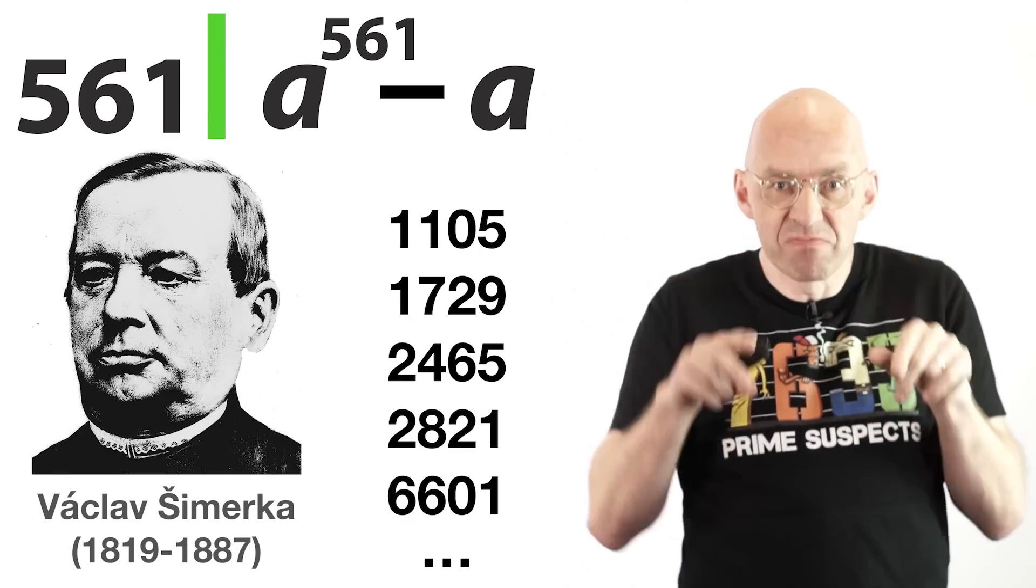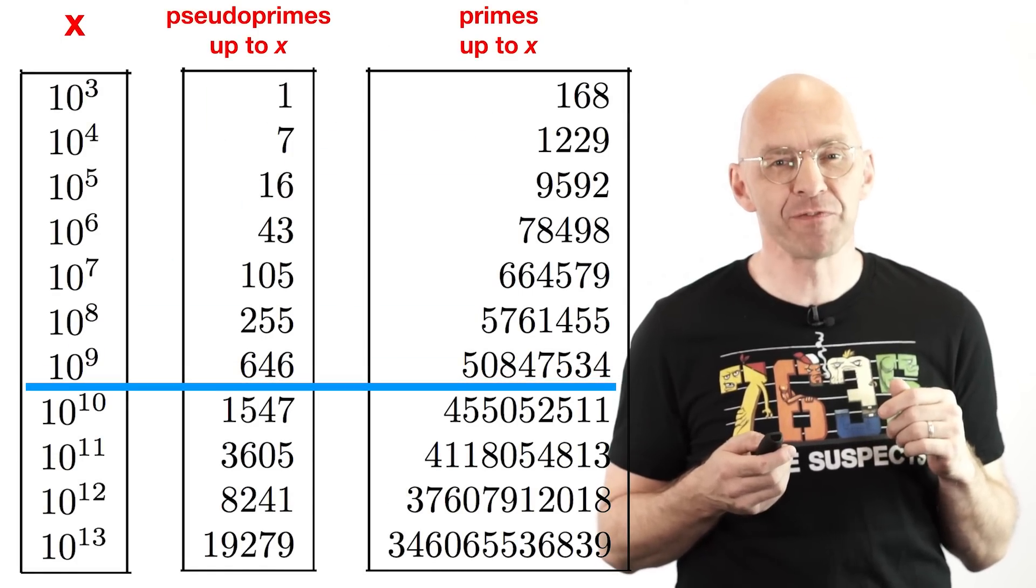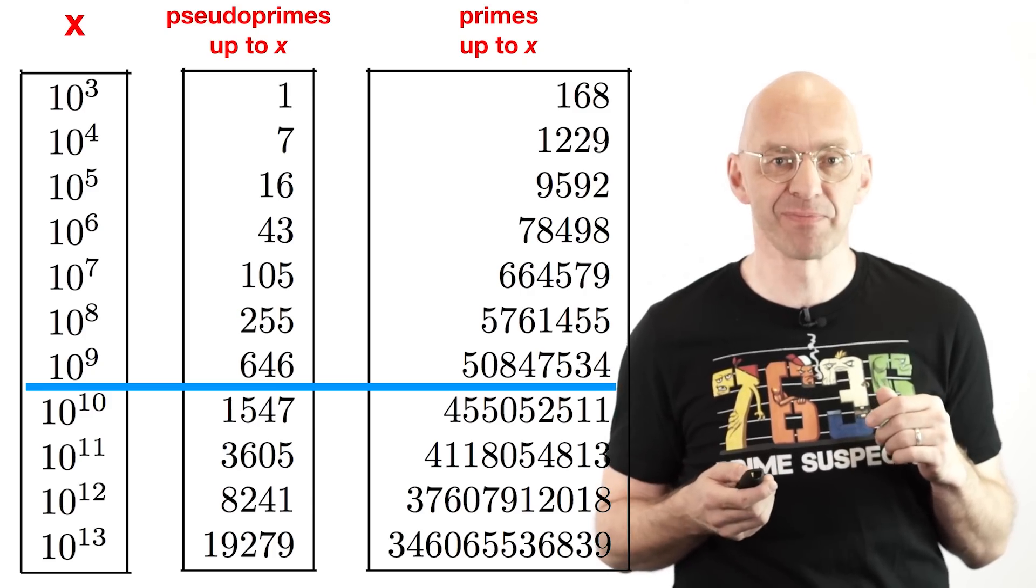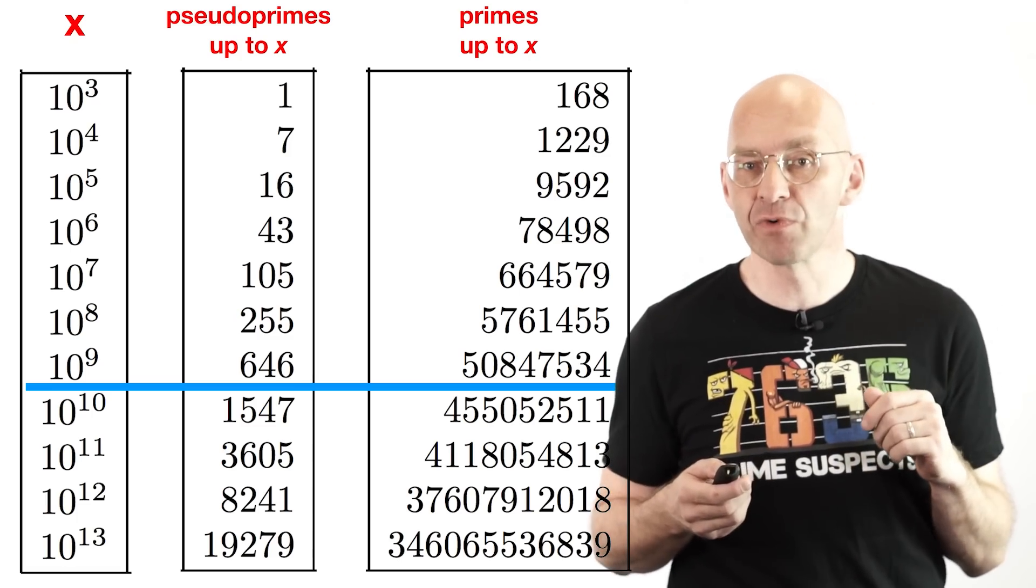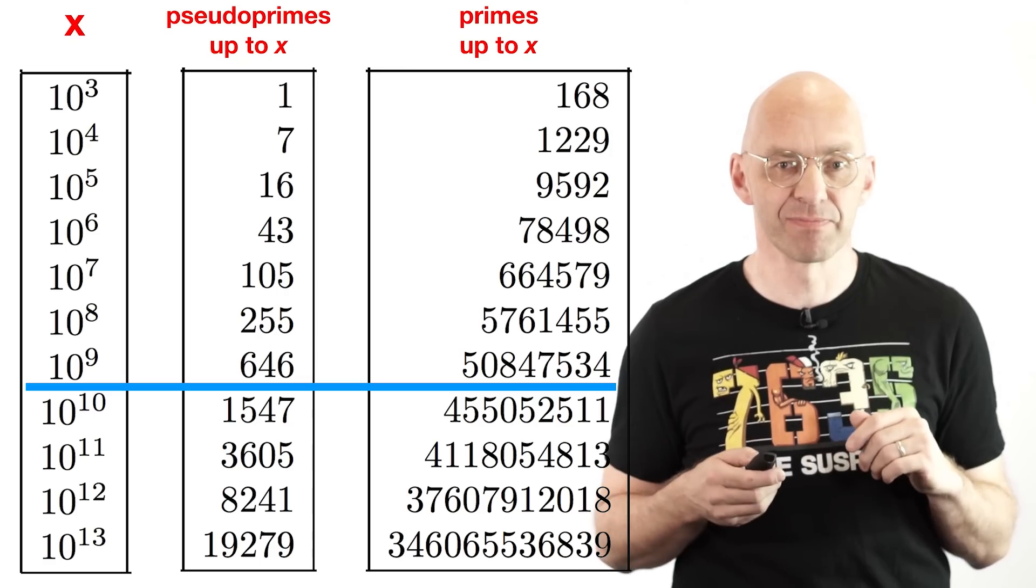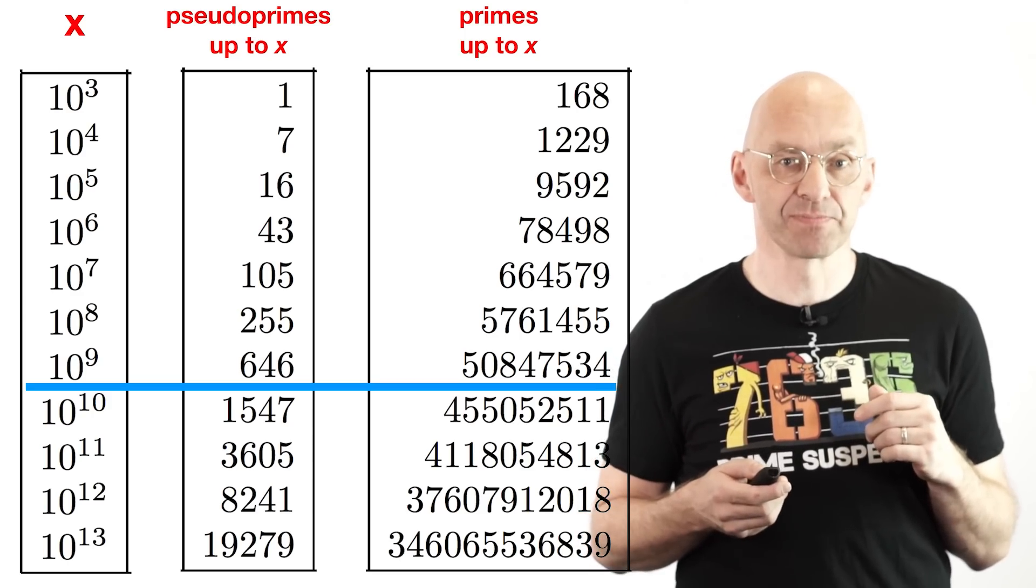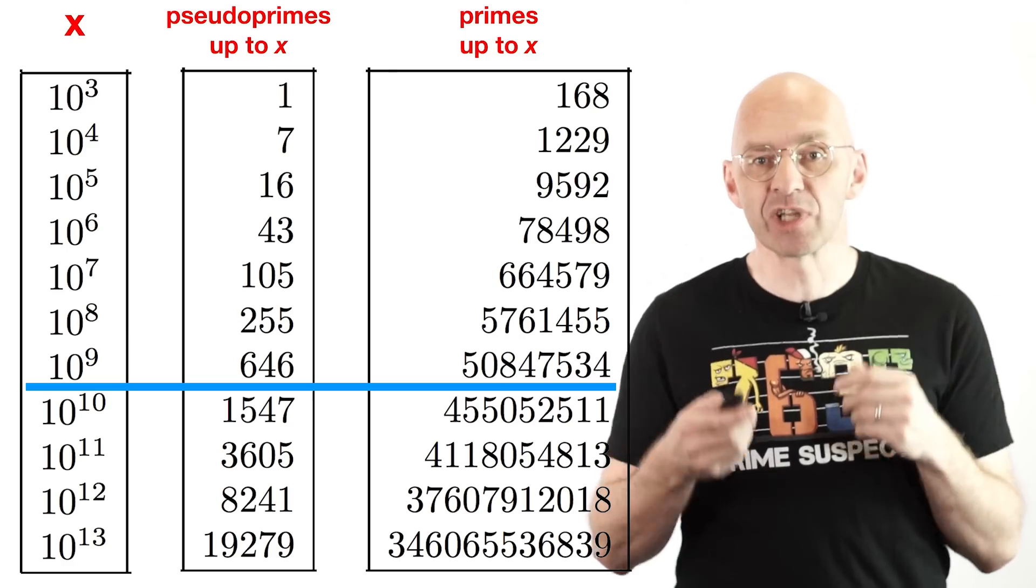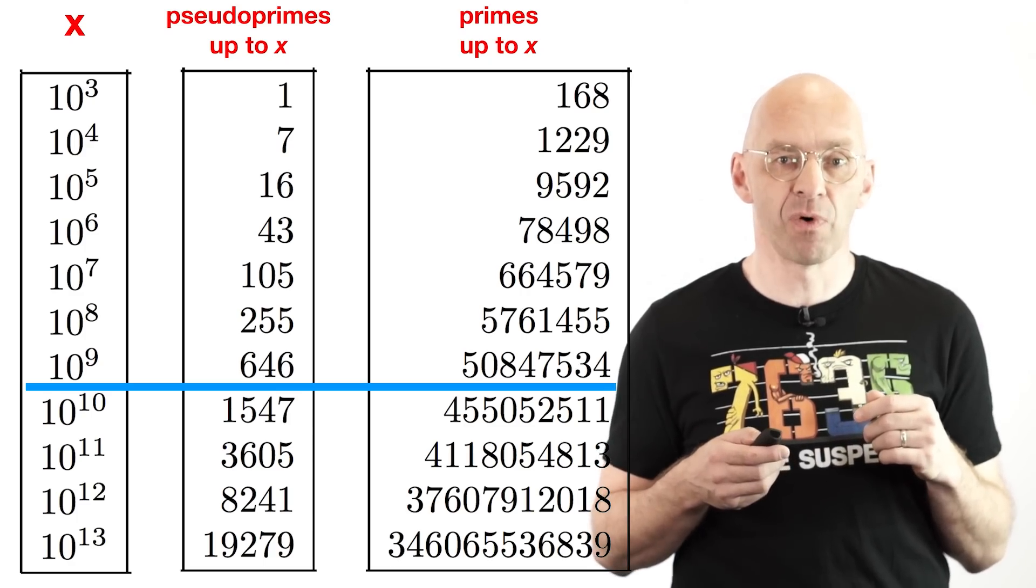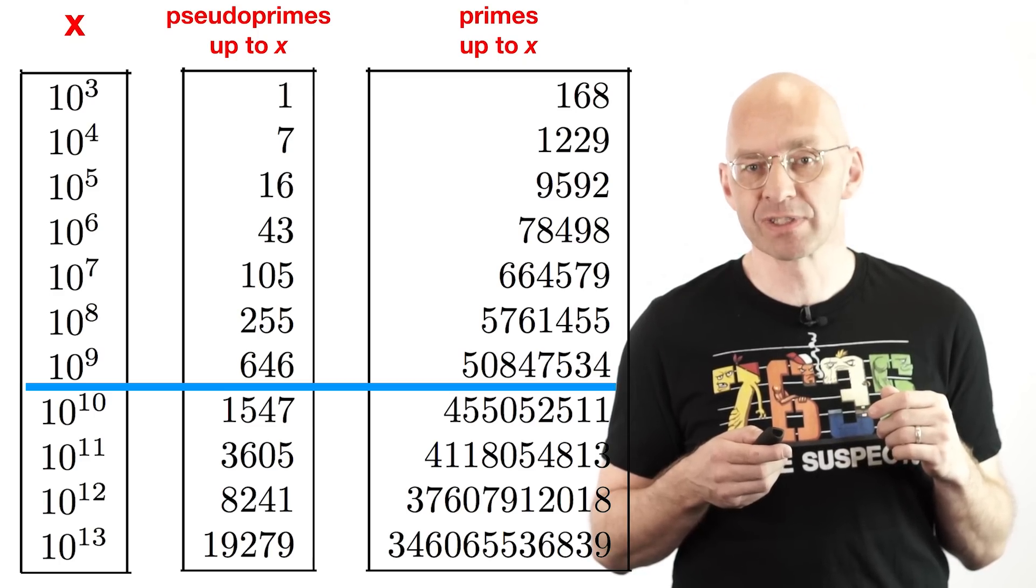Anyway, Carmichael numbers are very rare. Among the first billion positive integers there are over 50 million primes but only 646 Carmichael numbers. Still it was proved in 1994 that overall there are infinitely many Carmichael numbers. Really tricky stuff actually. Knowing about these numbers and the fact that they are relatively rare is also of practical importance. Being able to easily generate very large primes, primes that have a thousand plus binary digits, is of key importance for all sorts of encryption algorithms such as the algorithms that keep your credit card transactions safe.